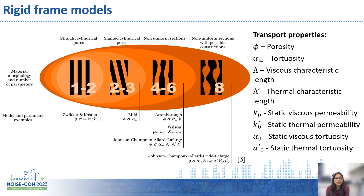All extracted transfer properties are input into the semi-phenomenological model. We are using the Johnson-Champoux-Allard-Pride-Lafarge model, or JCPL in short, to compute the characteristic pile properties and then the sound absorption behavior. This model requires eight transfer properties. Using the micro-macro modeling method, we extract six parameters by solving the three PDEs, and the other two — porosity and thermal characteristic length — are calculated purely based on the geometry.